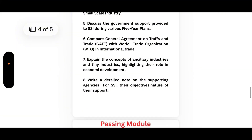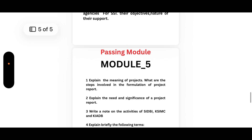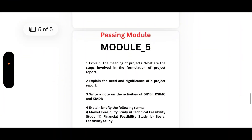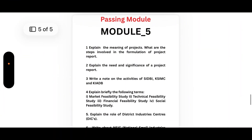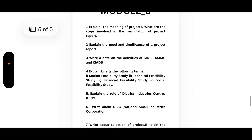Coming to Module 5, which is again a passing module. First, explain the meaning of projects and the steps involved in the formulation of a project report. Second, explain the need and significance of a project report. Third, write a note on the activities of SIDBI, KSIMC, and KIDB. Fourth, explain briefly the following terms: market feasibility study, technical feasibility study, financial feasibility study, and social feasibility study.